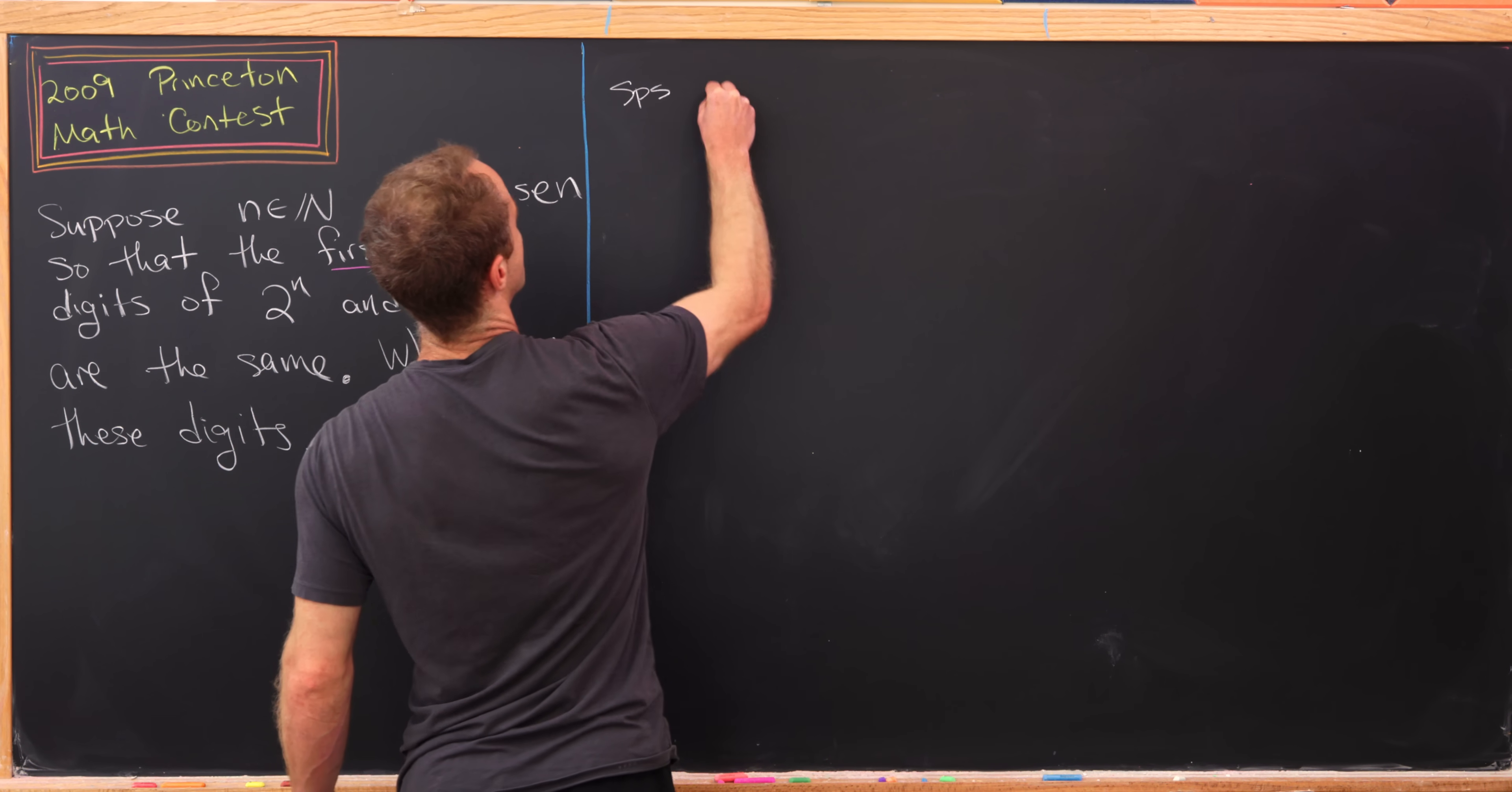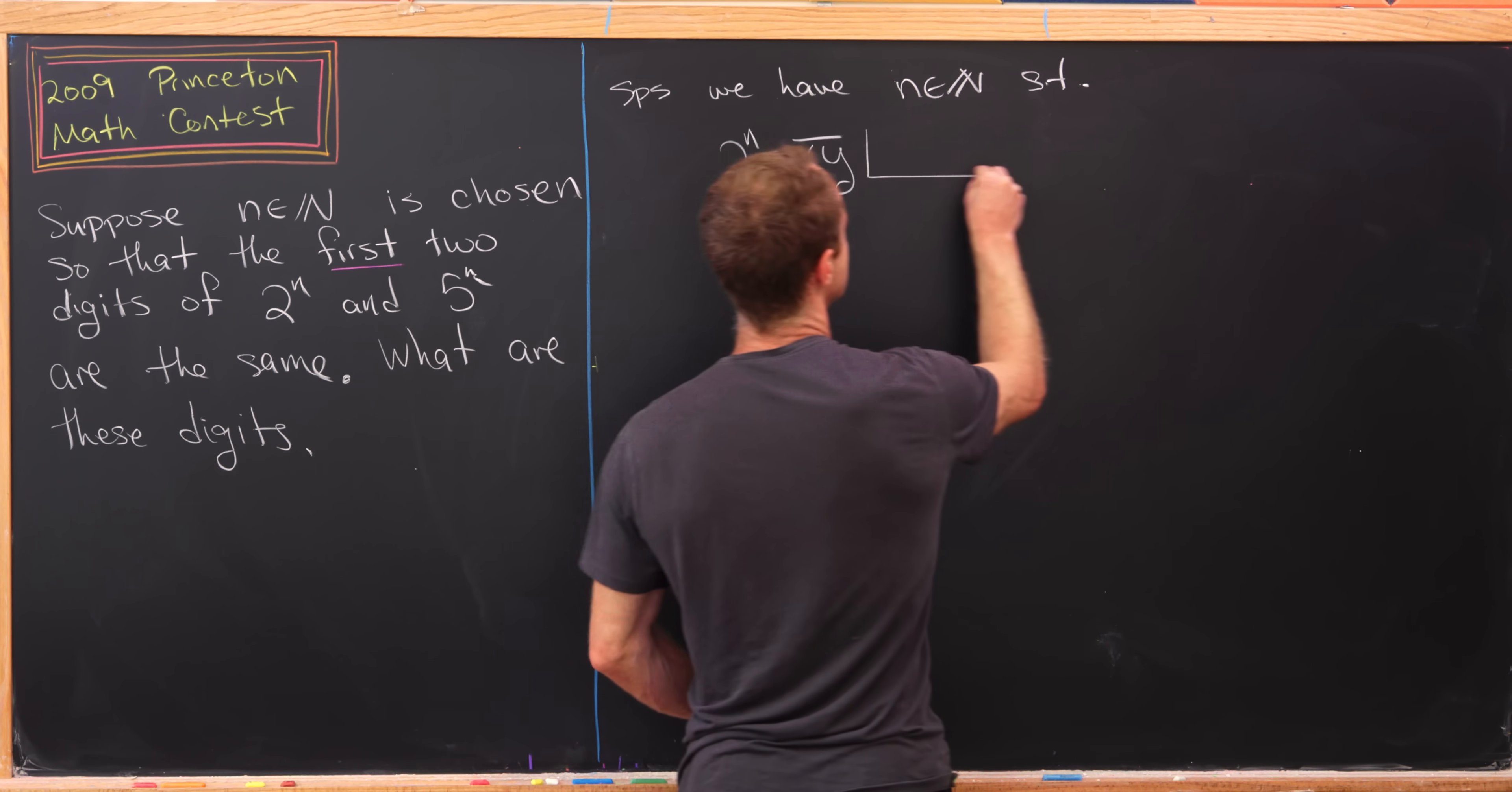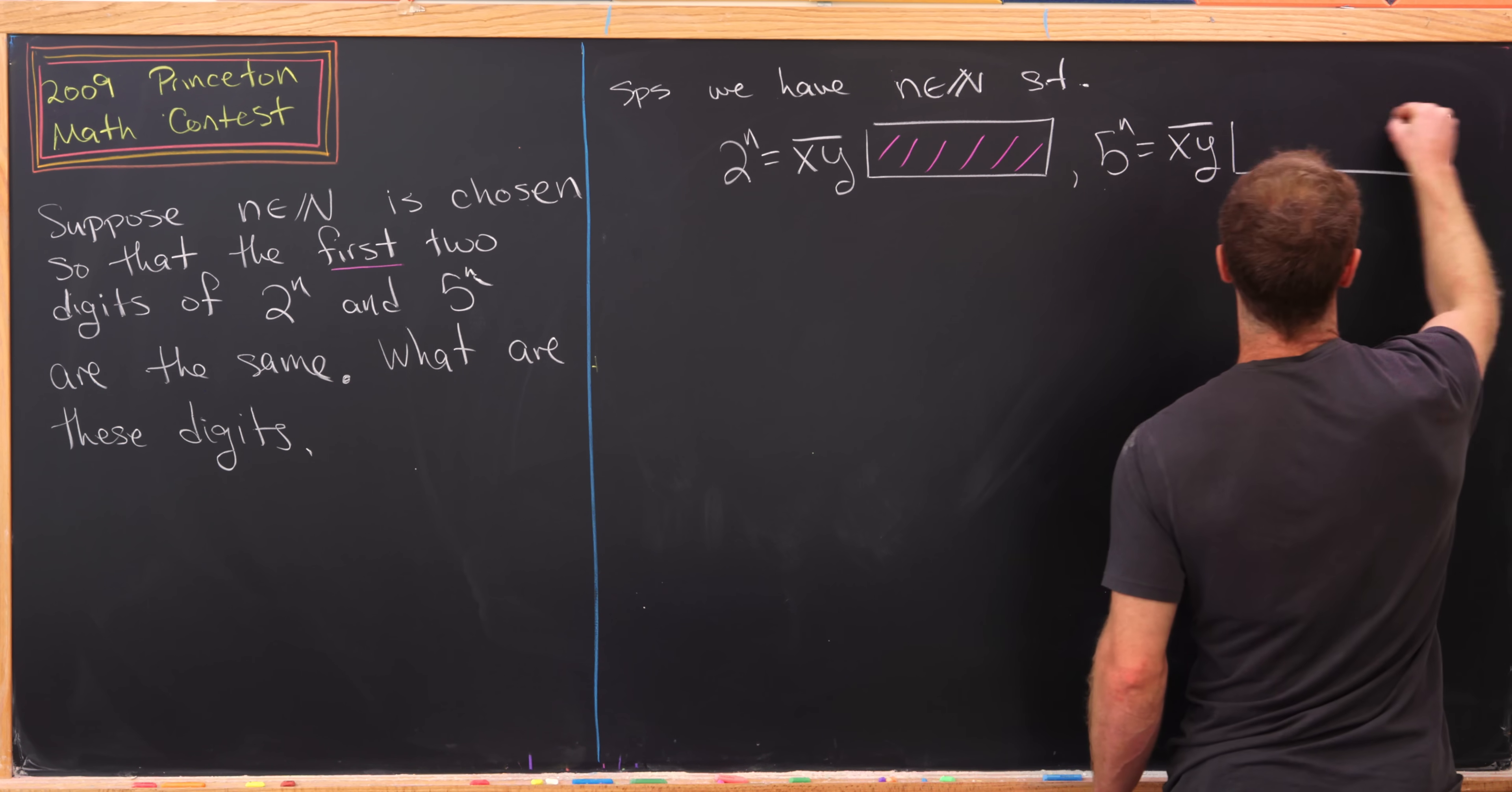Suppose we have some natural number n such that 2^n equals the first two digits x and y, and then after that is just a bunch of stuff. I'll put a box right here meaning all the rest of it. We don't really care about that.